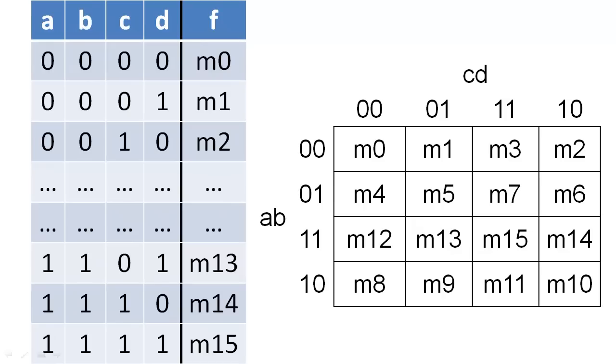When we expand a K-map to four variables, we similarly order the rows so that each cell differs by only one variable from its adjacent cells.